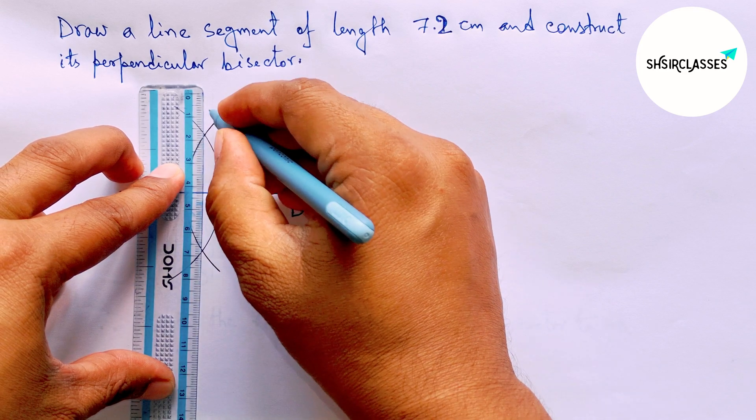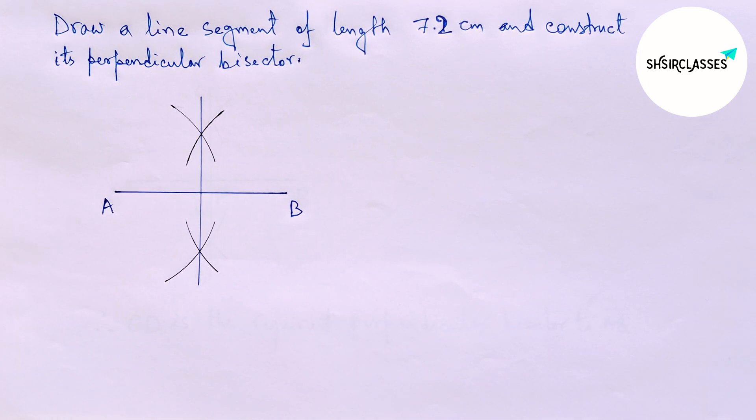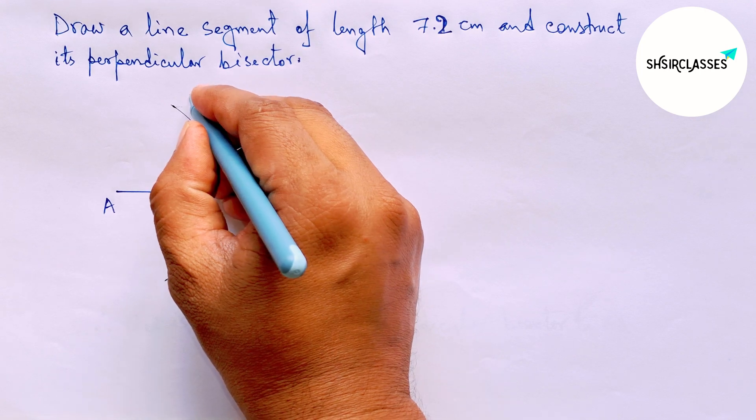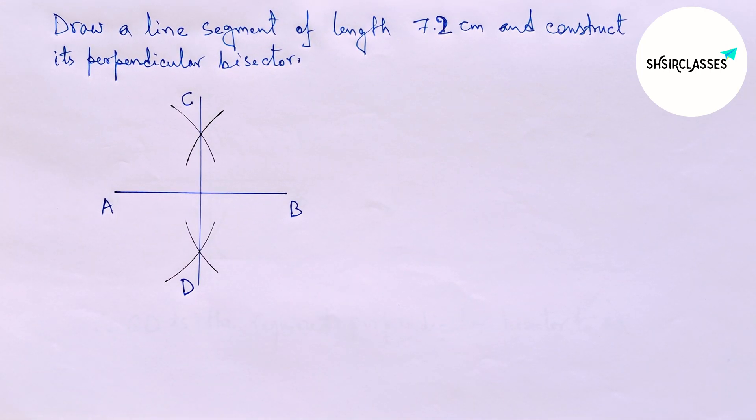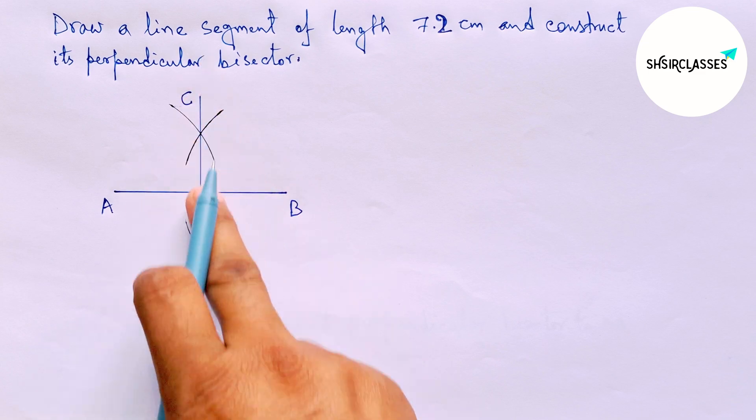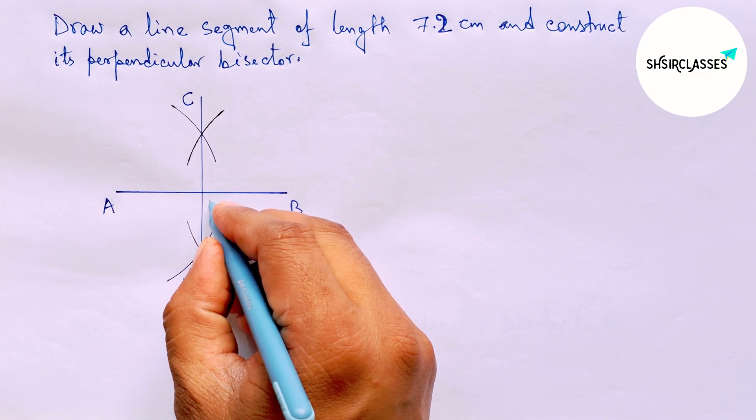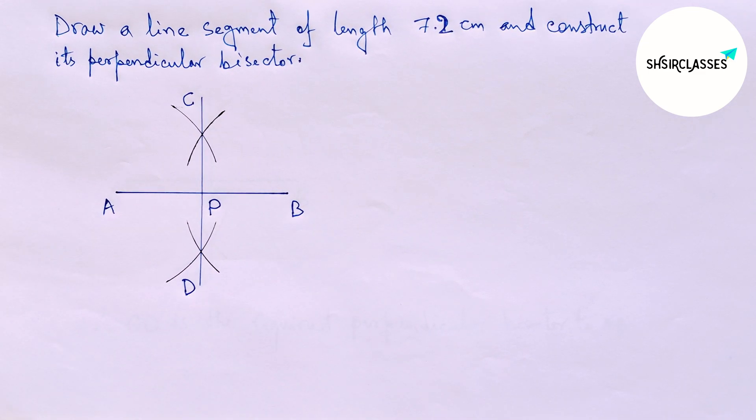Next, joining these points creates the required perpendicular bisector to the line AB. Label here C and D. AB and CD intersect at a point, so marking here point P.